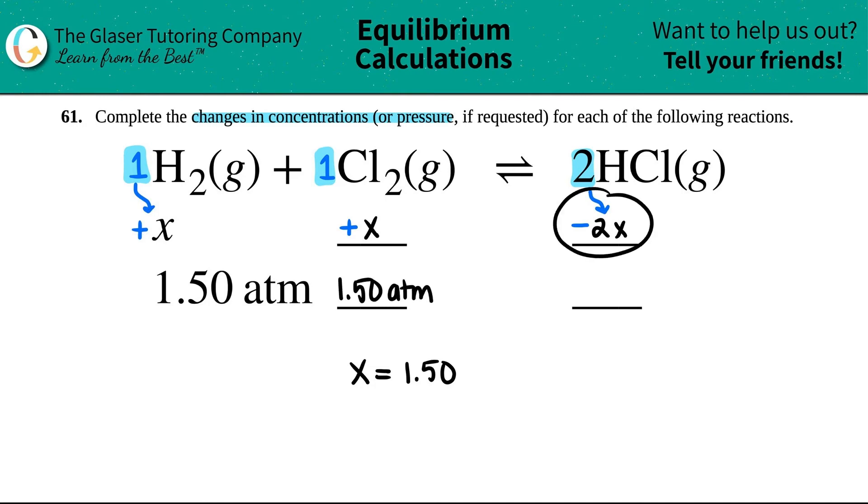But now on my product side for 2 HCl, I am decreasing by two times X. Well, I could just use algebra. I could say that this would be negative two times 1.5. And that's equal to three. So this would be minus 3.00 ATM. I just put the .00 there just for sig fig purposes.